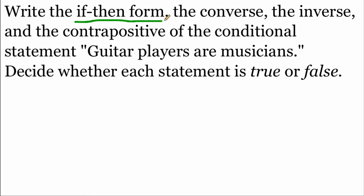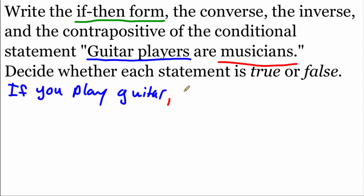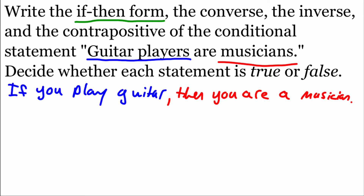Starting with the if-then form, we have to find our hypothesis and our conclusion. Our hypothesis is going to be that this person plays guitar, and the conclusion is that they are a musician. So the if-then form says: if you play guitar, then you are a musician. Is this true? Yes — playing that instrument makes you a musician. So the if-then form is true.